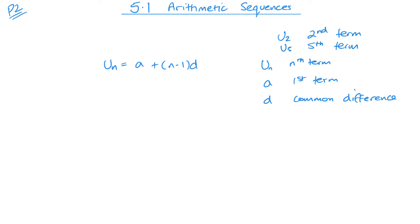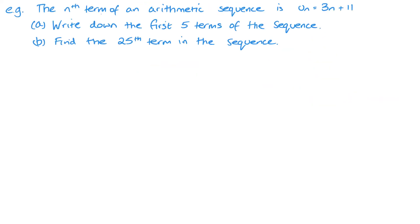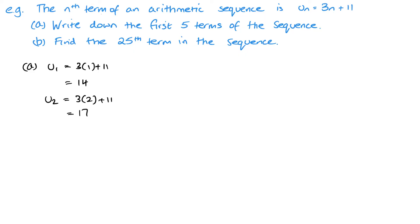Let's jump straight into a few examples. The nth term of a sequence is UN = 3N + 11. Write down the first five terms and then find the 25th term. So for U1, substituting 1 in for n gives 3 + 11 = 14. U2 is 3 × 2 + 11, so 6 + 11 = 17. What you'll notice is that these are going up in 3s, as it's a 3N.